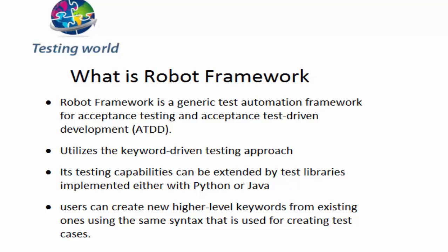In manual testing, when we are going to deliver any application to the client, the client or the BA — which is the business analyst — is going to perform acceptance testing on the application. Normally this acceptance testing is done manually, but we can use Robot Framework to automate that acceptance testing process.